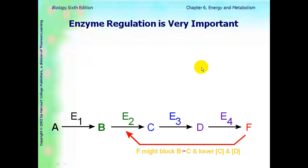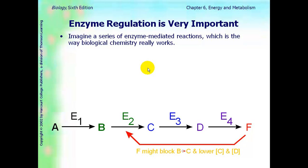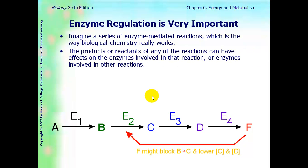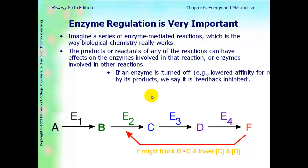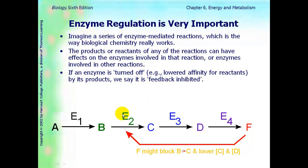Regulating is very important for enzymes. So, for example, imagine a series of enzyme-mediated reactions, which is the way chemistry and biology really works. And here is reaction A makes reaction B using enzyme 1. B, product B makes product C using enzyme 2. C makes D using 3, and D makes F using 4. The products or the reactants of any of the reactions can have an effect on later on, later reactions, and the enzymes are involved later. If an enzyme is turned off, so if E2 is turned off, then that's going to affect the products of C. So if an enzyme is turned off by its products, then it's called feedback inhibition.